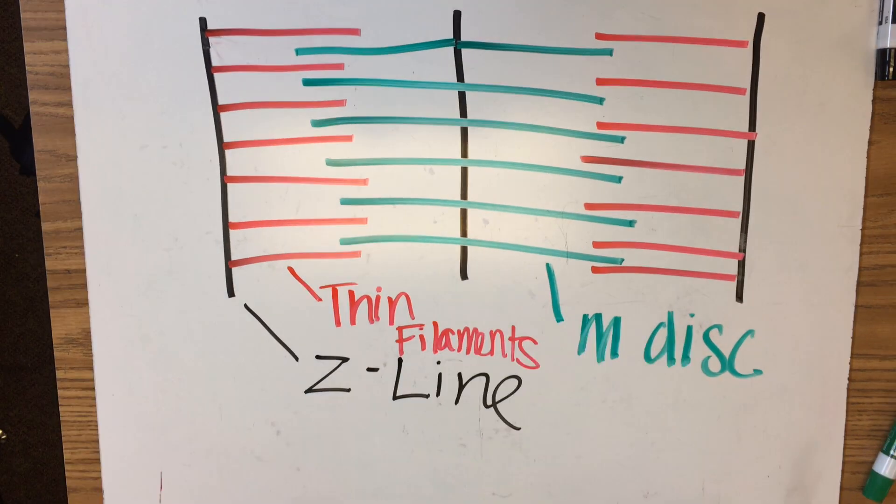Now the red are called thin filaments also known as the actin. These are the lightest and least dense structures of the sarcomere.